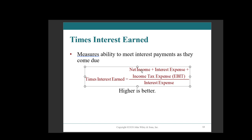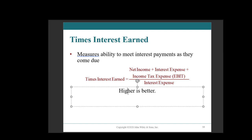EBIT is where we take our net income, add back the interest expense, and add back income tax — so: what are your earnings before interest and taxes? Then you divide by your interest expense. This tells you how much of your earnings before interest and taxes you have available to service your interest expense. In general, higher is typically better.